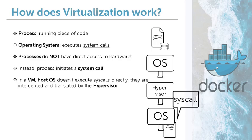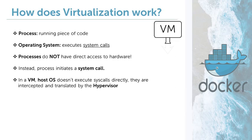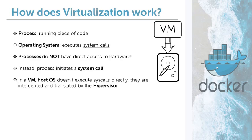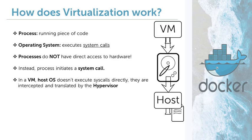It then translates the virtual system call to a real system call. The VM might think it has a hard disk, like most computers do, but actually, instead of being an actual physical hard disk, it is just a file on the hard disk of the host operating system. So when our process thinks it is trying to open a file, it is just trying to access a chunk of the larger file living somewhere on the host operating system, which it thinks is a hard disk.